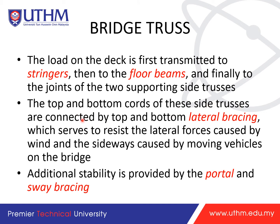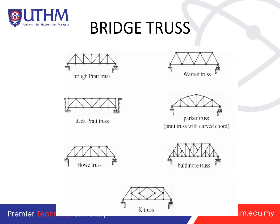The top and bottom cords of the side trusses are connected by top and bottom lateral bracing, which resists lateral forces caused by wind and side sway caused by moving vehicles. Additional stability is provided by the portal and sway bracing. There are seven types of bridge trusses shown here, numbered one through seven.